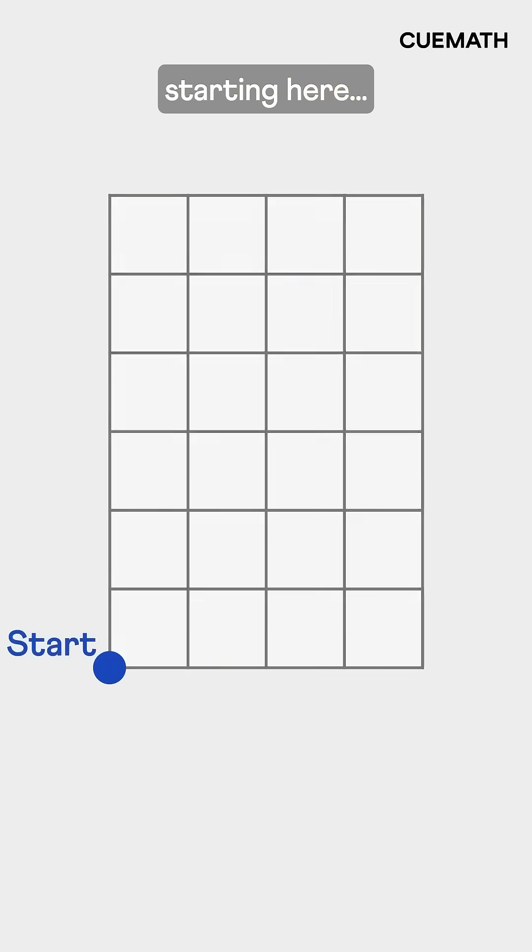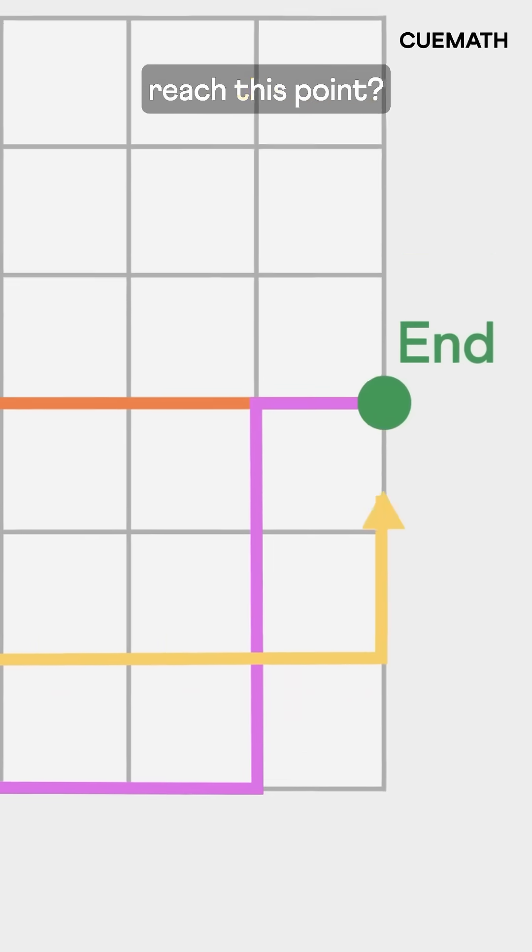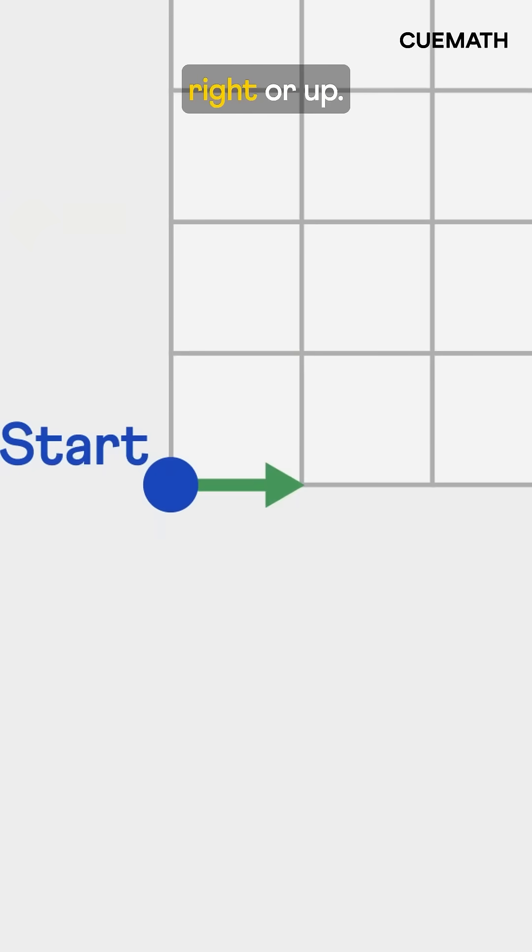On this grid, starting here, how many different ways can we reach this point? We can only move right or up. No turning back.